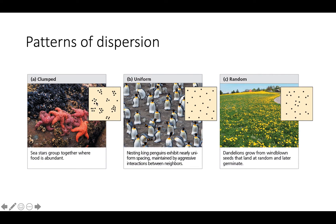With clumped dispersion, you'll see clustering of organisms around where those resources are. Uniform dispersion means everything is evenly spaced out, and you see this a lot with organisms that have aggressive behavior and are very territorial, keeping certain distances from other members of the population.